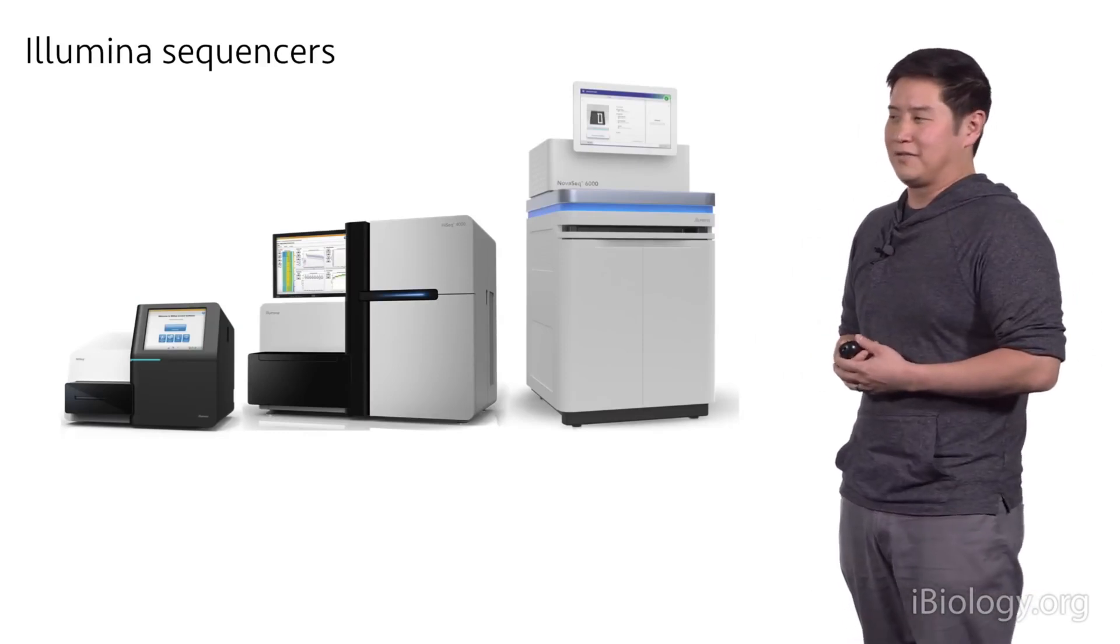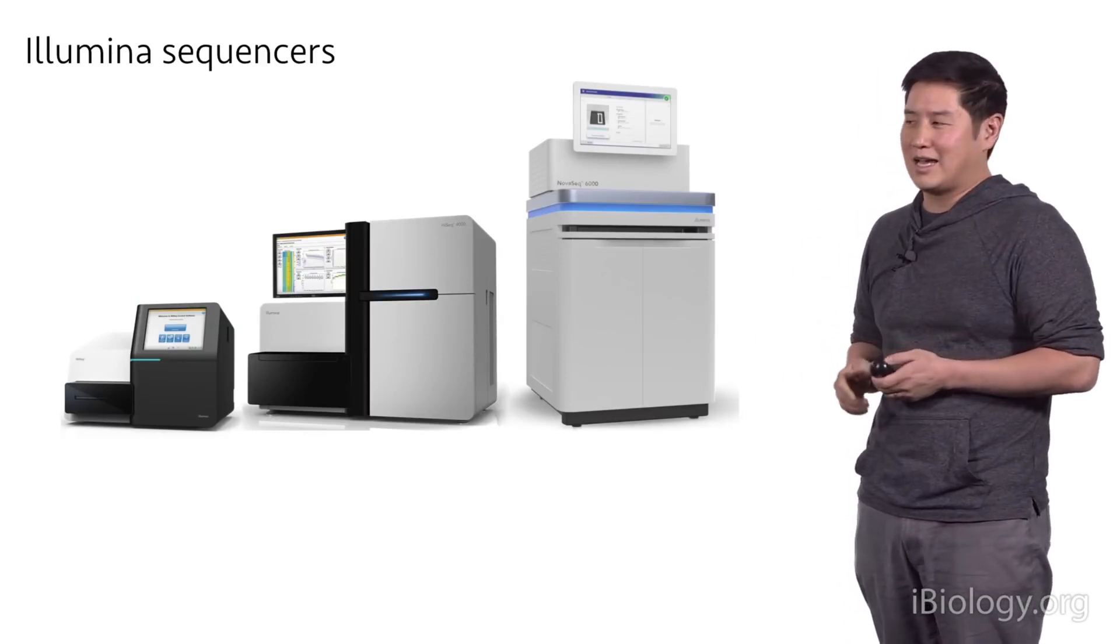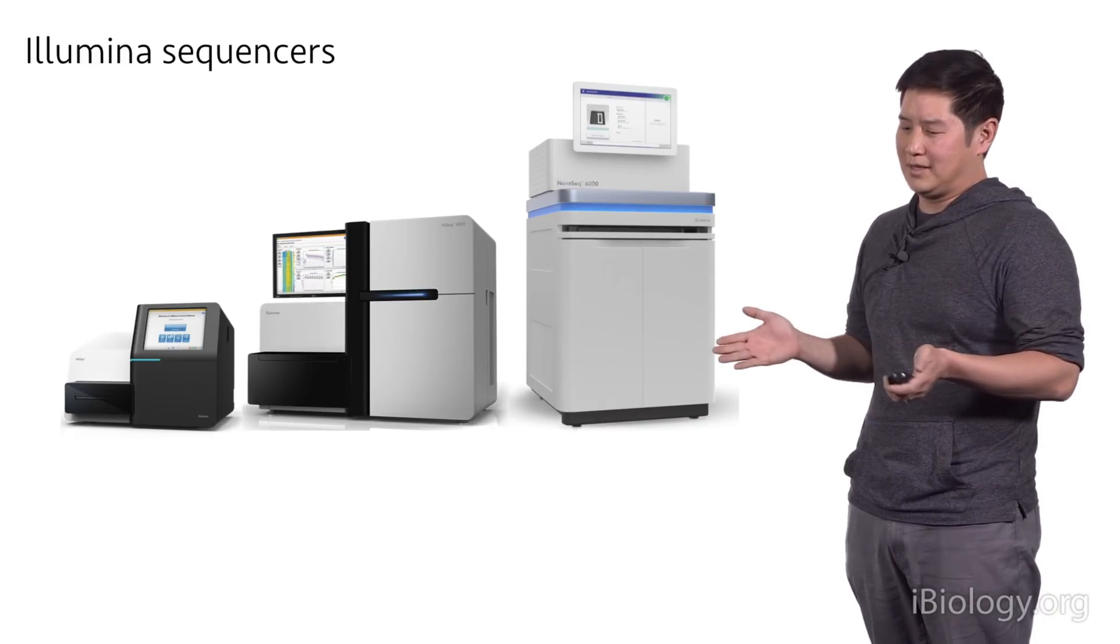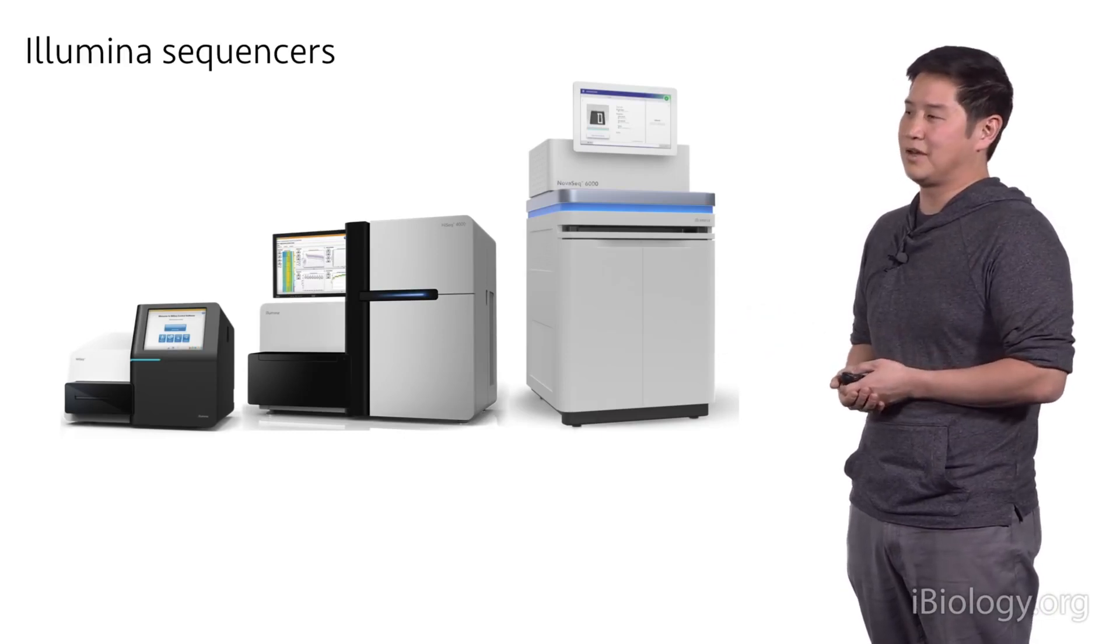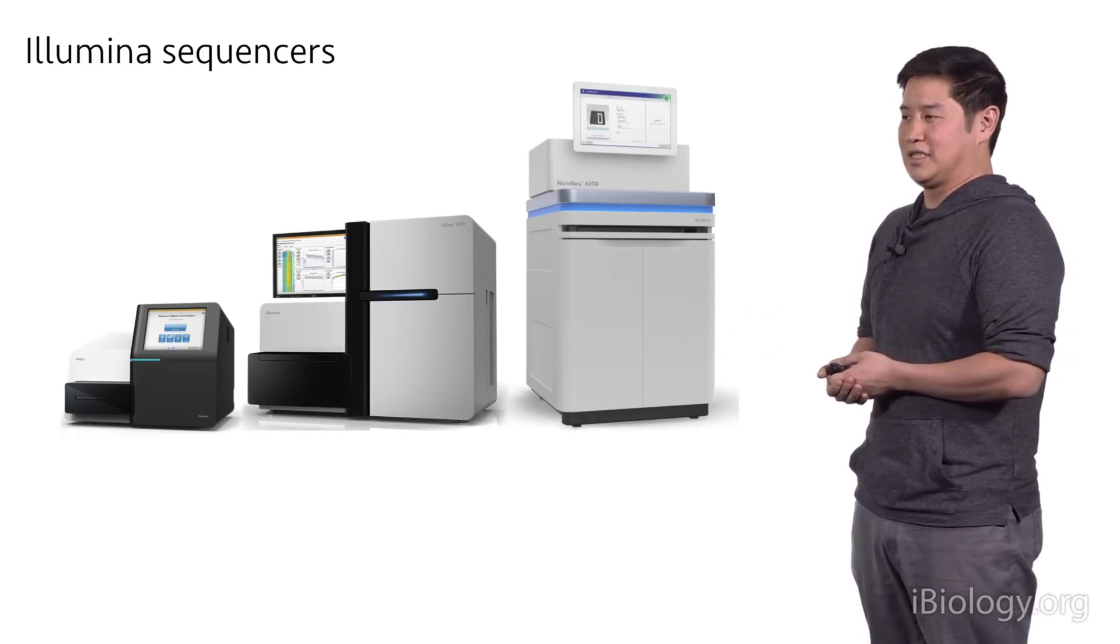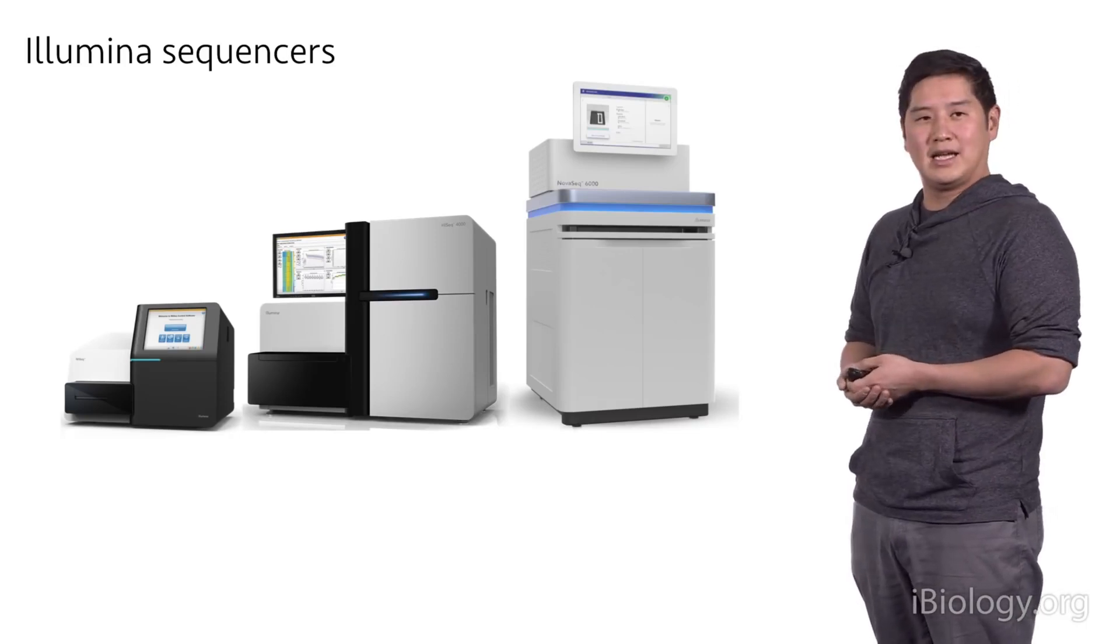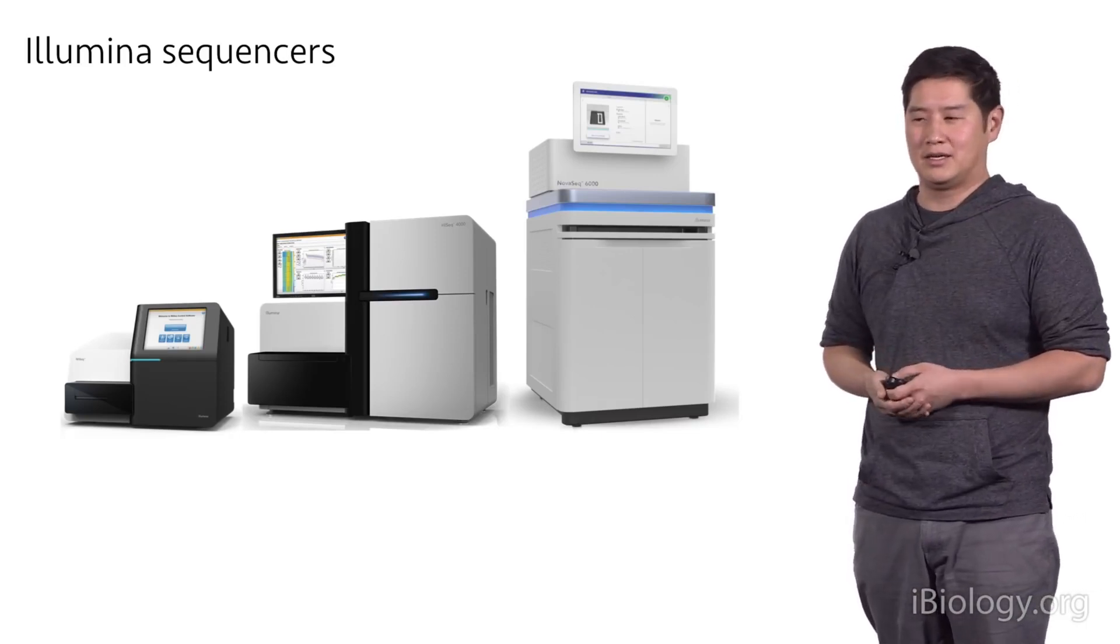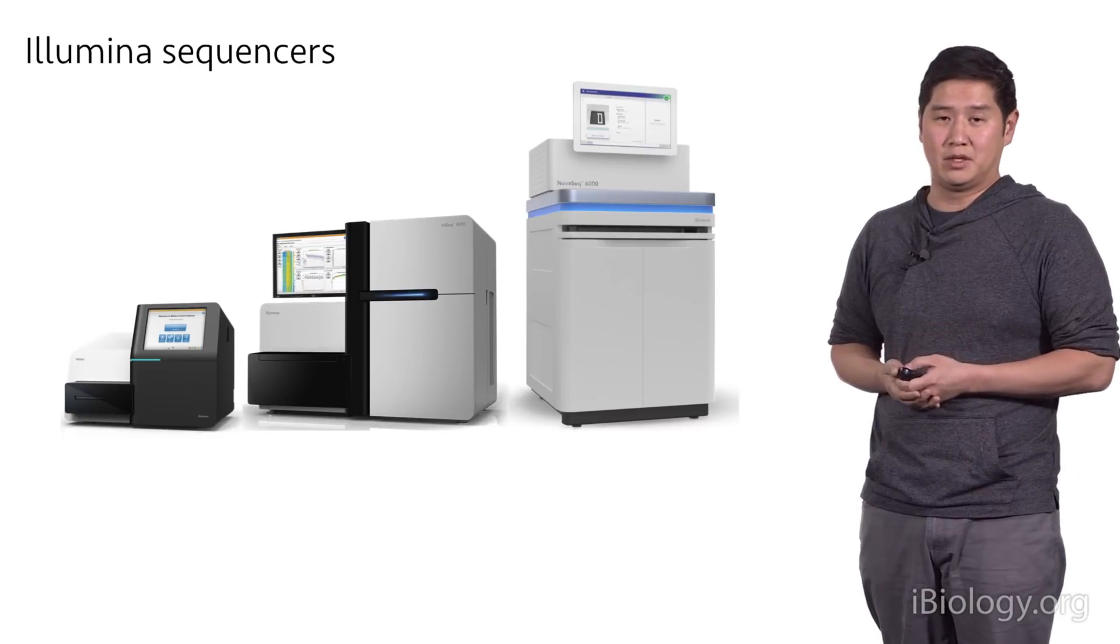On this slide are three different types of sequencers from Illumina. They actually have several more, but they really span the scale of sequencing that's being offered. On the left-hand side is the Illumina MySeq instrument, in the middle is the HiSeq, and on the right is the NovaSeq, the newest high output sequencer from Illumina.